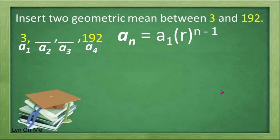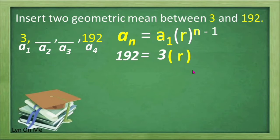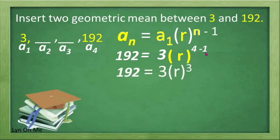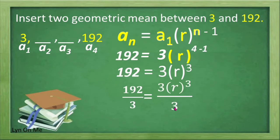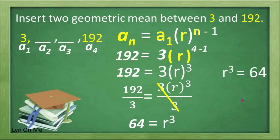We are going to use the formula again: a sub n is equal to a sub 1 multiplied by r raised to n minus 1. The value of a sub n is 192, and a sub 1 is equal to 3, multiplied by r raised to 4 minus 1. Why 4? That's the value of n. Simplifying the exponent, 4 minus 1 equals 3. Then we divide both sides of the equation by 3 to eliminate the numerical coefficient of r cubed. 192 divided by 3 equals 64, so r cubed is equal to 64.